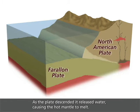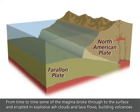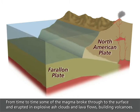As the plate descended, it released water, causing the hot mantle to melt. The resulting buoyant magma rose and pooled beneath the surface. From time to time, some of the magma broke through to the surface and erupted in explosive ash clouds and lava flows, building volcanoes.